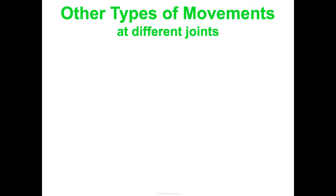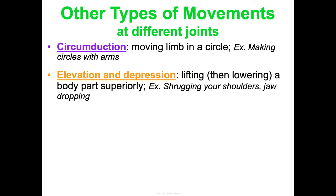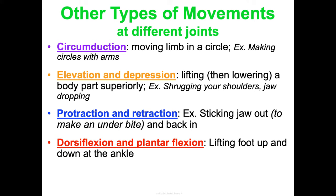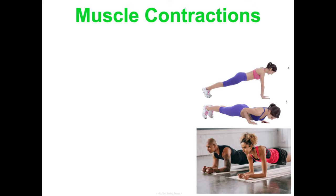There are many other types of body movements beyond abduction, adduction, flexion, extension, and rotation. Circumduction is moving a limb in a circle. Elevation and depression involve lifting and lowering body parts superiorly, like shrugging your shoulders or dropping your jaw. Protraction and retraction involve sticking the jaw out and pulling it back. Dorsiflexion and plantarflexion occur specifically at the foot. Inversion and eversion involve turning the foot toward or away from the body's midline — ankle sprains often result from these movements.